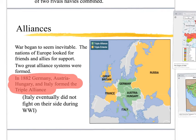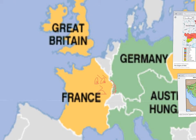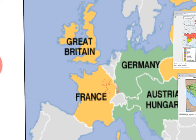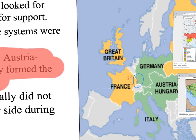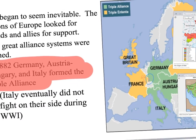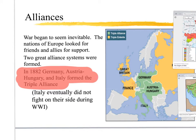One thing you have to know is that Germany and France hate each other. They fought a Franco-Prussian War — Germany used to be called Prussia — and France lost this territory called Alsace and Lorraine. The French are going to want that territory back. So in response, Germany teams up with Austria-Hungary and Italy to form an alliance — the Triple Alliance. If France decides to attack Germany to take the land back, it would be like declaring war on Austria-Hungary and Italy at the same time.